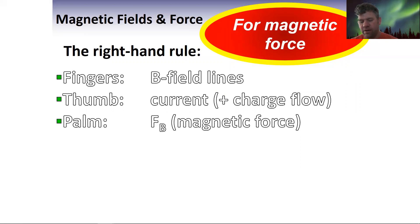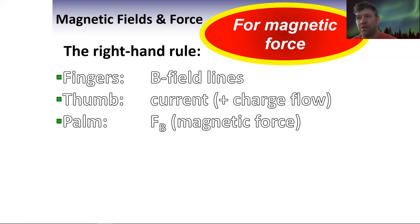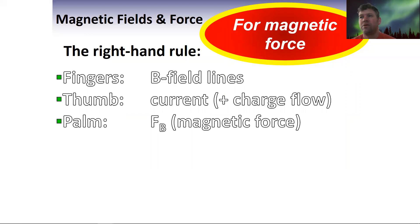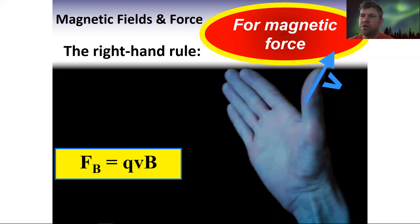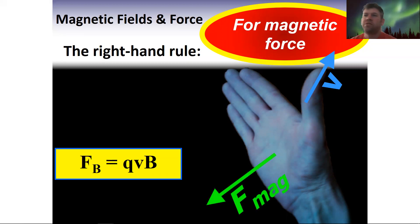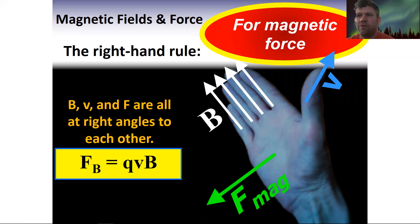This is called the right-hand rule for a reason — you use specifically the right hand. One of the most common mistakes you're going to make is suddenly switching to the left hand. Right hand only. The velocity of your positive charge-carrying particle, the magnetic force, and the magnetic field are all at right angles to each other.